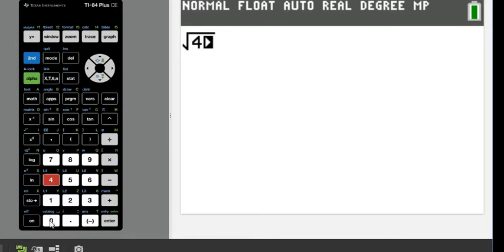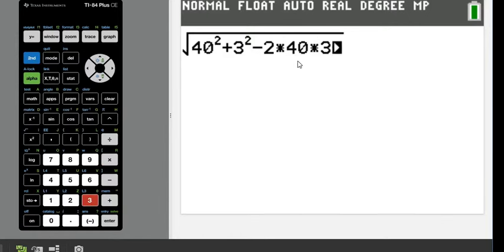40 squared plus 3 squared minus 2 times 40 times 3. It doesn't matter the order of the 40 and the 3. If I had done 3 squared plus 40 squared, I would have gotten the same answer.